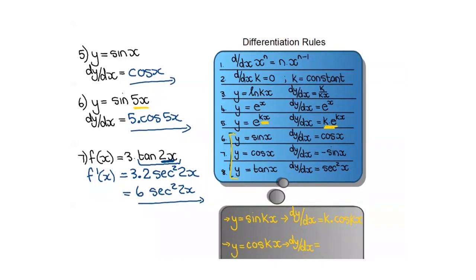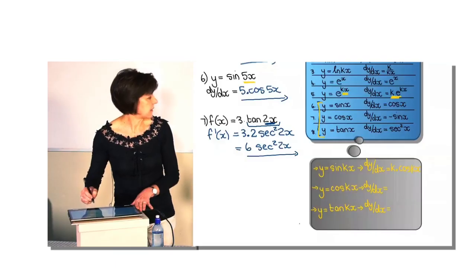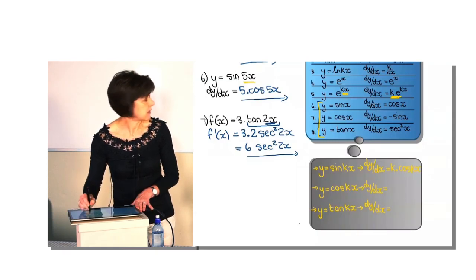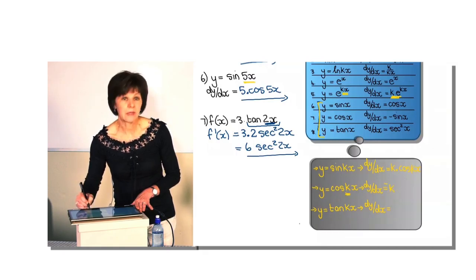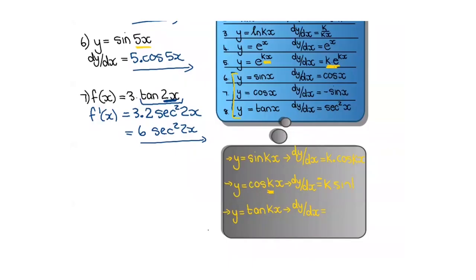Let me summarize these rules of sin(kx), cos(kx) and tan(kx). If the derivative of cos is negative sine, then for cos(kx) I multiply the derivative by k. So the derivative of cos(kx) is negative k sin(kx). For y equals tan(kx), the derivative of tan is sec squared, but remember the k first, then it will be k sec squared(kx).